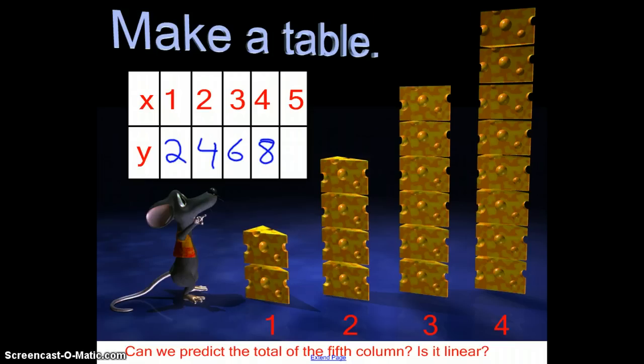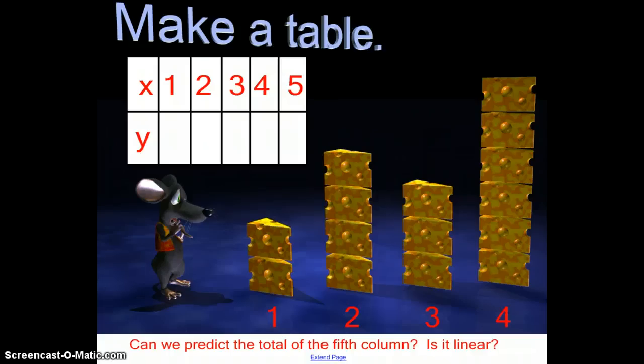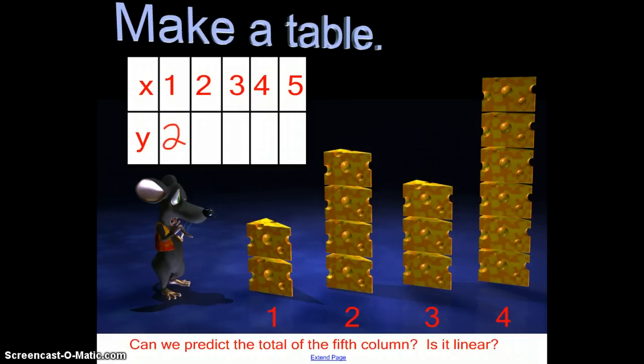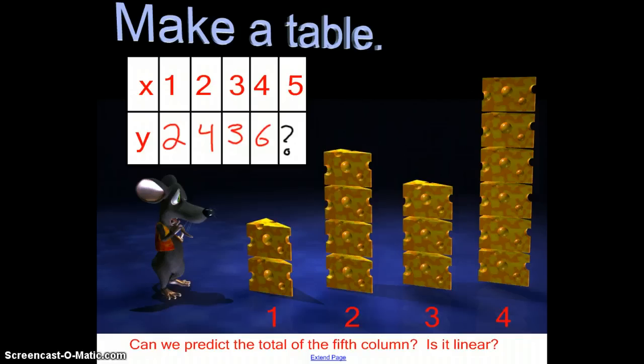So that would be a linear function and it goes evenly. We can also predict two, four, six, eight. This next line is going to be ten. So that is a linear function. If you look at this example here, it goes at one, he's only got two pieces of cheese, the next time he's got four pieces of cheese, the next time he's down to three, and the next time he's up at six. Because it's not going up or down by the same amount, we have absolutely no idea what is going to be in the fifth column. That means it is not a linear function.